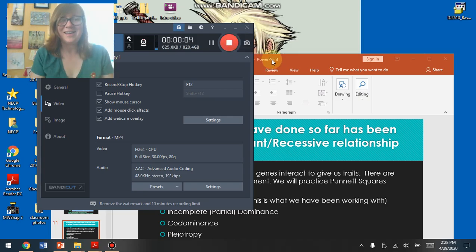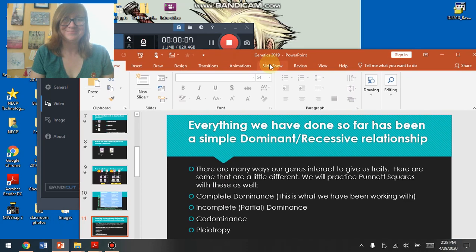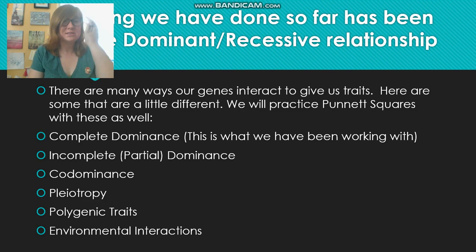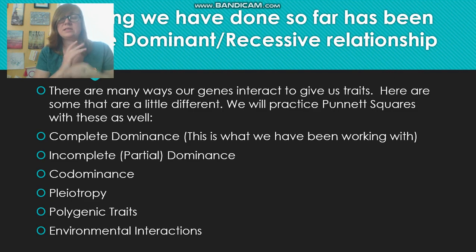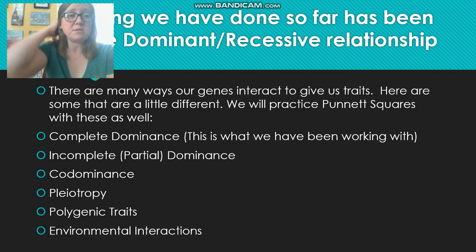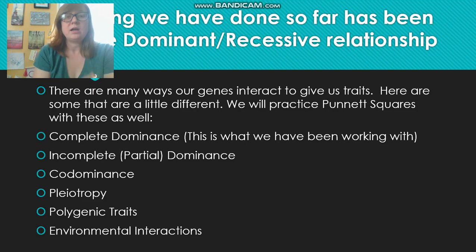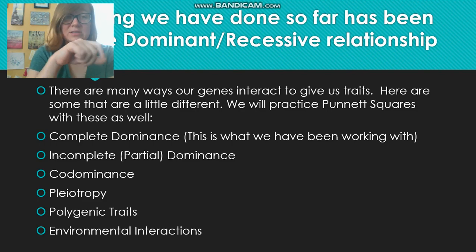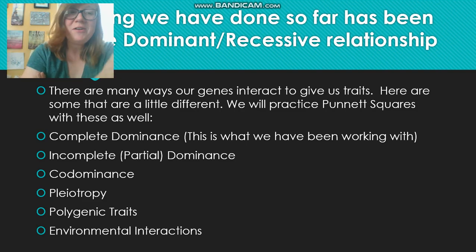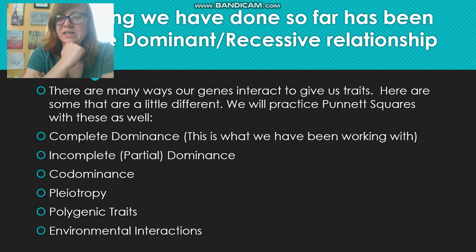Welcome back. Last time we briefly looked at Punnett squares. You're probably used to complete dominance — as long as you have a capital letter, like capital T, it will show the dominant trait; a lowercase t shows the recessive. That means as long as you have one dominant allele you show the dominant trait. That's probably everything you've learned. But Mendel got really lucky that the pea plant traits he looked at were pretty much all complete dominance. Many traits are not like that.